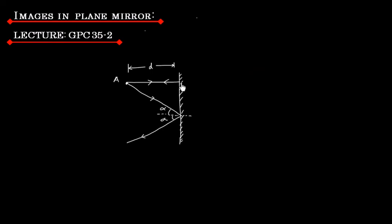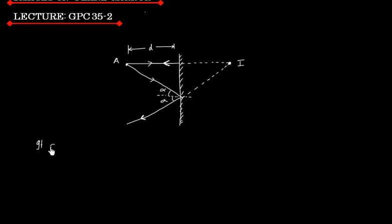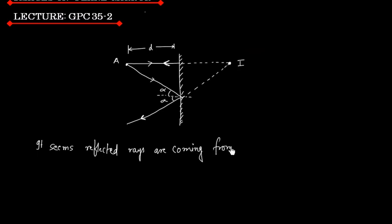Now if I extend these two reflected rays, they will meet at a point — let us call this point I. So it looks like these reflected rays are coming from point I. So I is basically the image of object A.